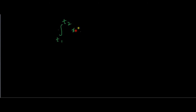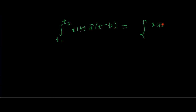Extending that property, we can write it as: the integral from t₁ to t₂ of x(t)·δ(t − t₀) dt is nothing but x(t₀), if t₀ lies between t₁ and t₂; otherwise it is 0. For example, if we integrate from minus 1 to 3 of the expression x(t)·δ(t − 2) dt, since 2 lies between minus 1 and 3, this is essentially the value of x(t) at t equal to 2.